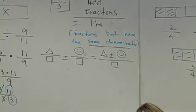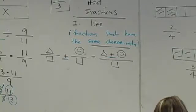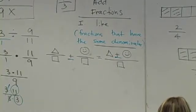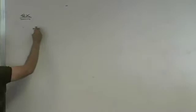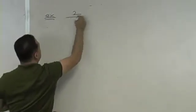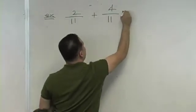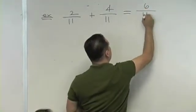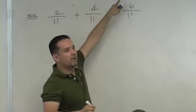So let's see some examples. For example, two elevenths plus four elevenths. What does that give you? Six elevenths. Because two plus four is six. Good.